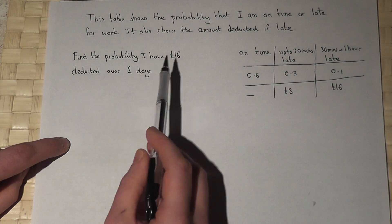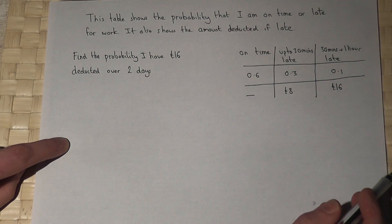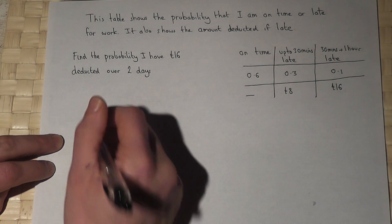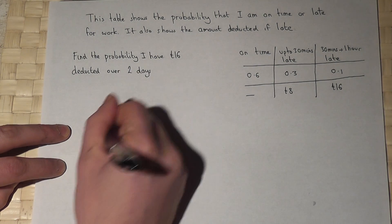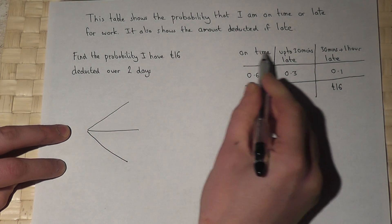The question says what's the chance that I have £16 deducted over two days. Now one way to solve this is through a tree diagram. On the first day there are three options A, B, and C.